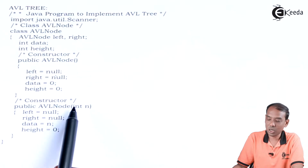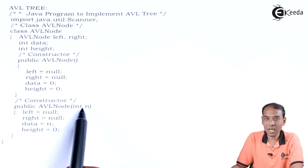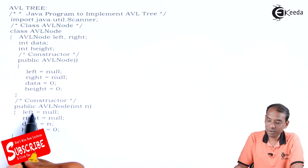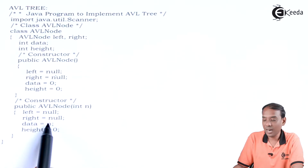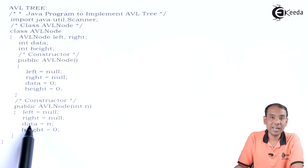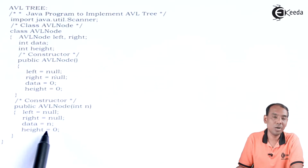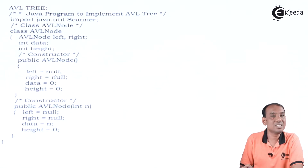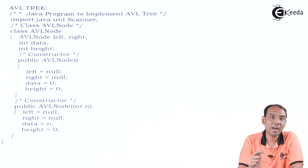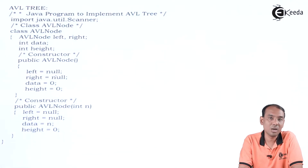We also have a parameterized constructor in which we pass the value through the variable n, where n is taken from the user. We write: left equals null, right equals null, data equals n (the value the user wants to insert), and height is set to 0 as the starting point. These four reference variables — left, right, data, and height — form the structure of the AVL tree.